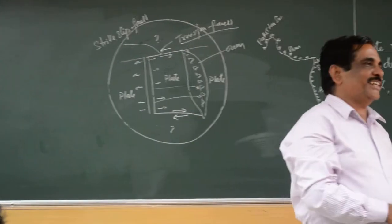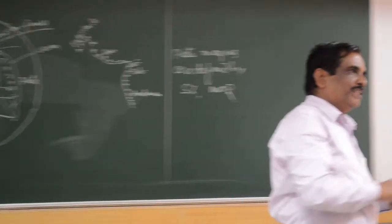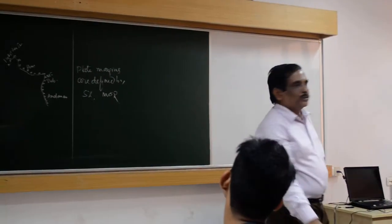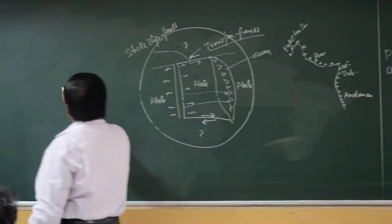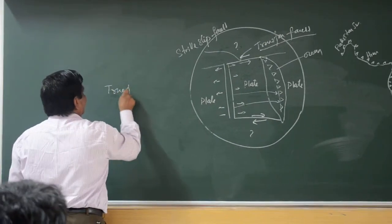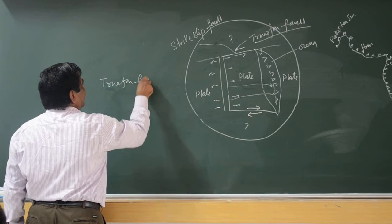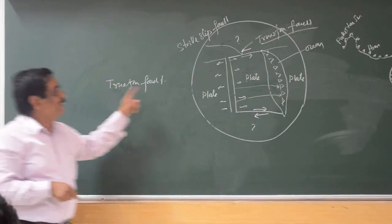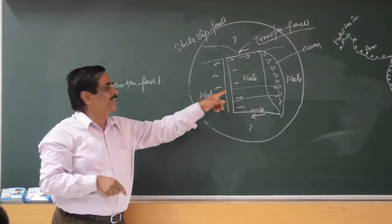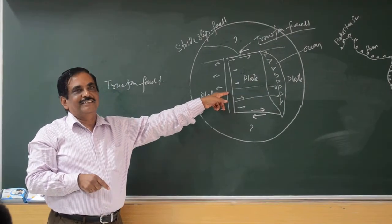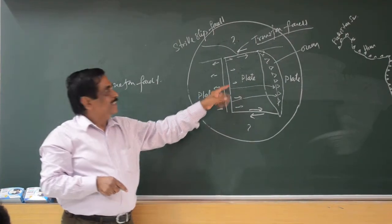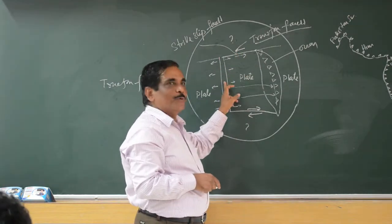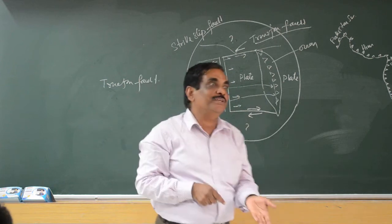Why is this fault created? I will make it much more detailed a little later, but now it is so important. So this transform fault is a necessary tectonic element for crustal growth. It does not take part in subduction, but it helps in subduction. It does not take part in the opening of the ocean, but it helps in the opening of the ocean.